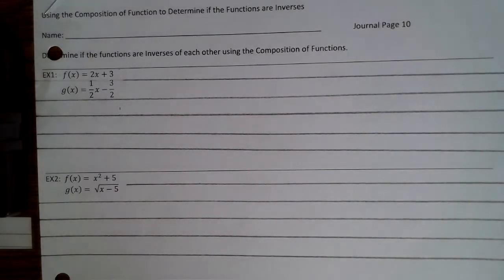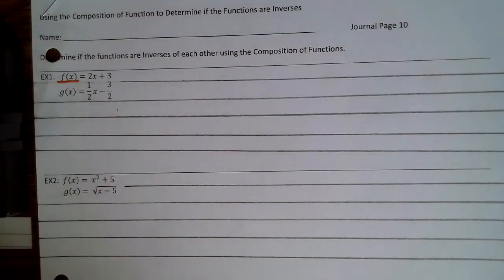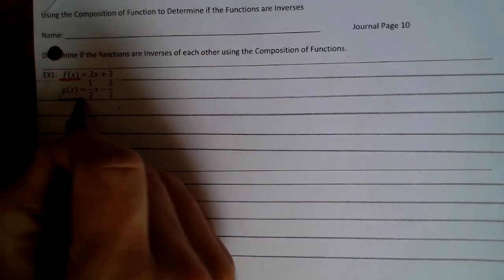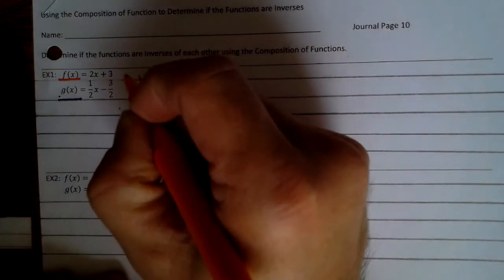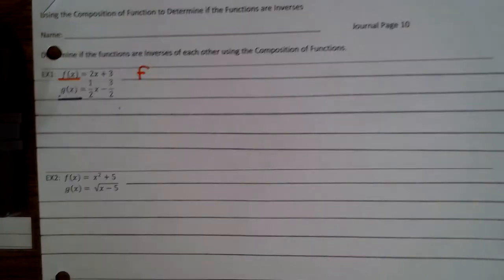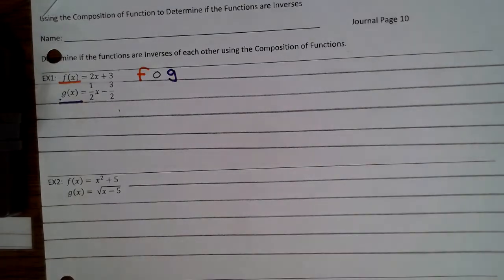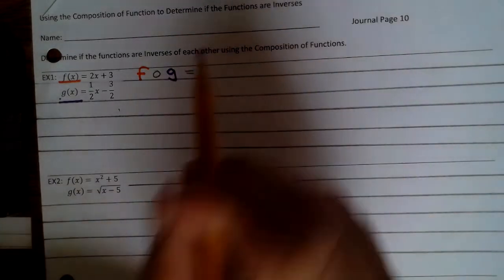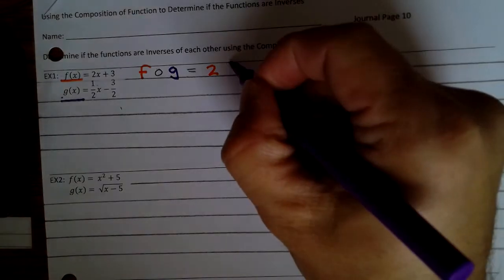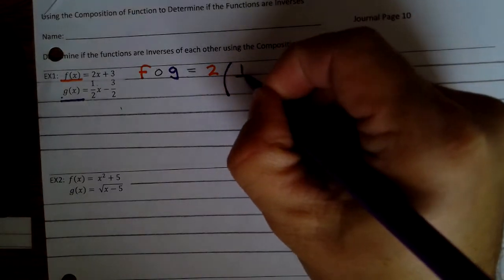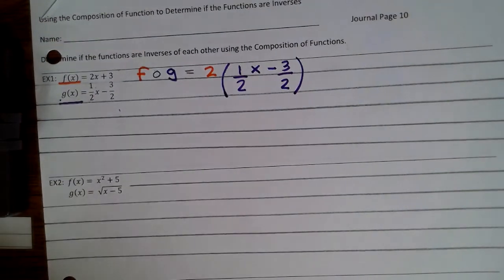So determine if the functions are inverses of each other using a composition function. I'm going to do f of x in orange and g of x in purple. So f of g — we're putting the function g into f. So that's 2 times one-half x minus 3 divided by 2, plus 3.